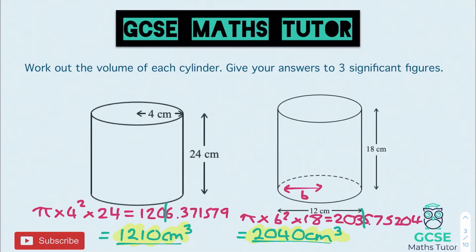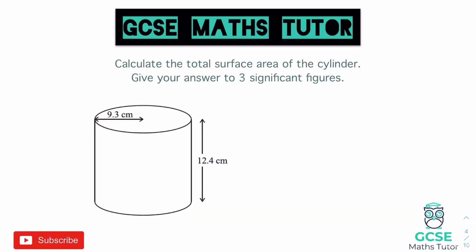That is volume of a cylinder — quite nice and quick. Now we're going to look at working out the surface area. The surface area of a cylinder requires a little bit more working out. We're going to work out the total area of all the different surfaces: the circle on top, the identical circle on the bottom, and the curved surface going around the outside of the cylinder.